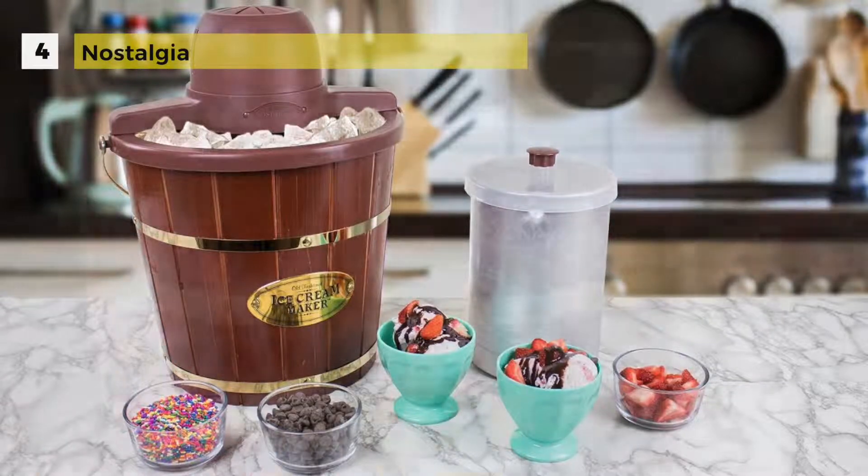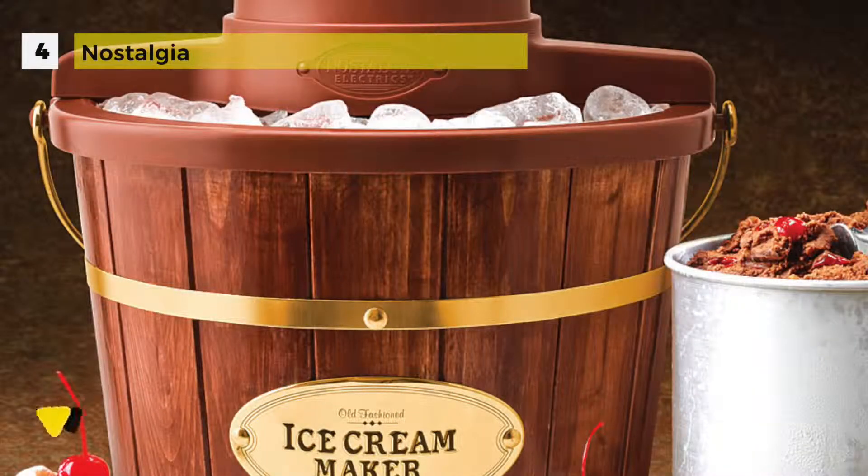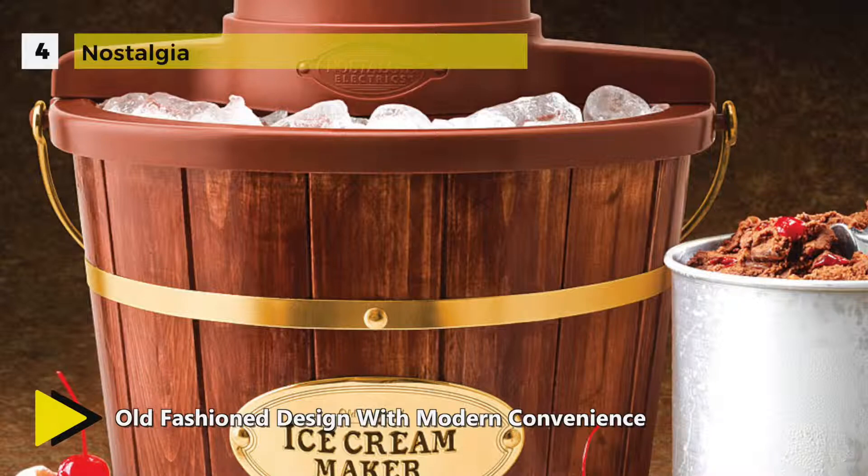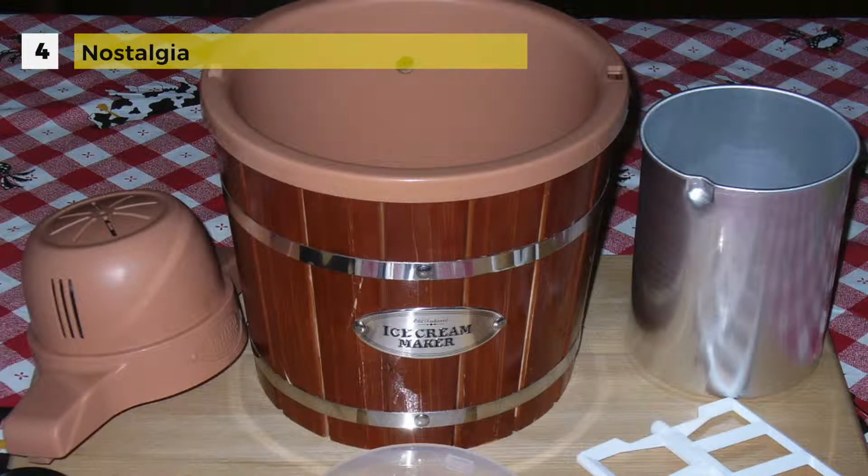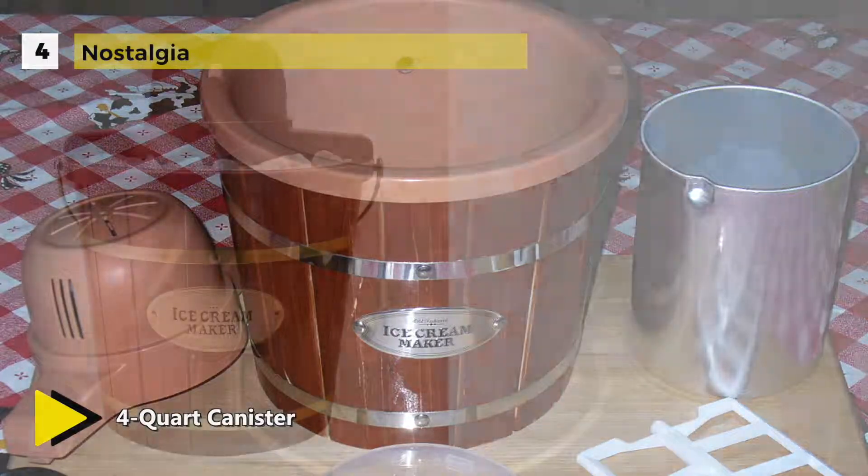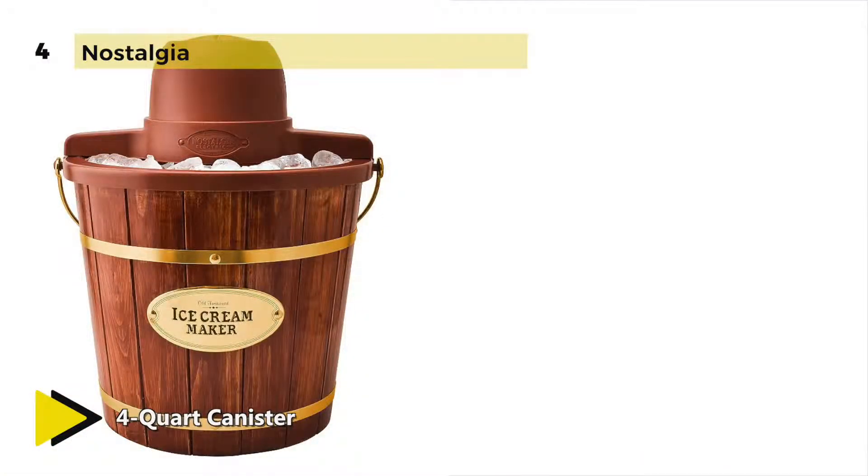The fourth place Nostalgia ice cream maker is a fast and easy way to make four quarts of ice cream, frozen yogurt, or gelato. It features a locking motor mount, easy to clean bucket, and a four quart aluminum canister. Simply add your ingredients into the aluminum canister, place it in the middle of the bucket, layer with ice and salt, and allow the motor to do the rest.